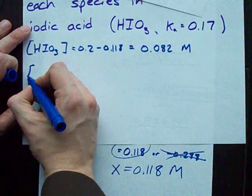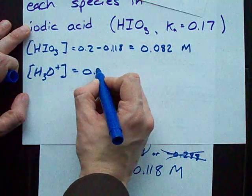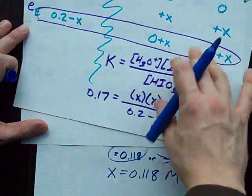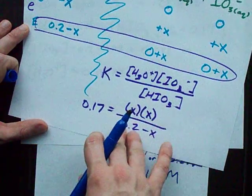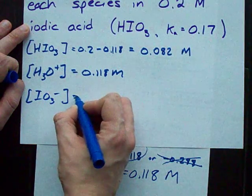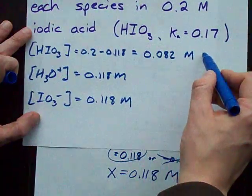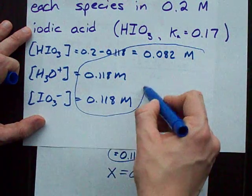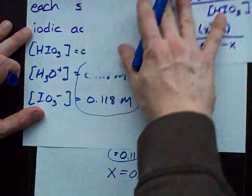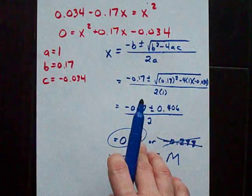My equilibrium concentration of H3O+ is just X, and my equilibrium concentration of iodate, IO3-, is also just X. These are my equilibrium concentrations, which I got from my ICE table after I solved for X using the quadratic formula.